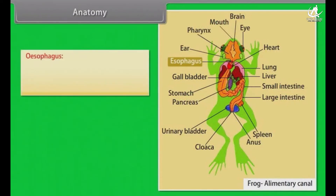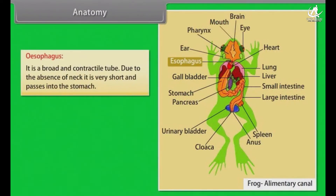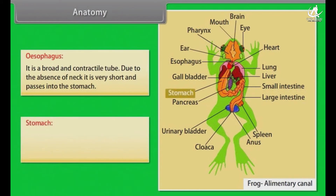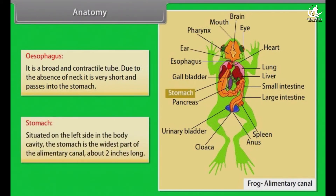The oesophagus is a broad and contractile tube. Due to the absence of the neck, it is very short and passes into the stomach. The stomach is situated on the left side in the body cavity and is the widest part of the alimentary canal, about two inches long.